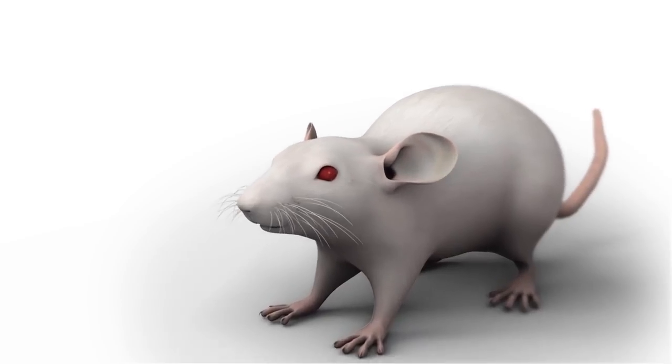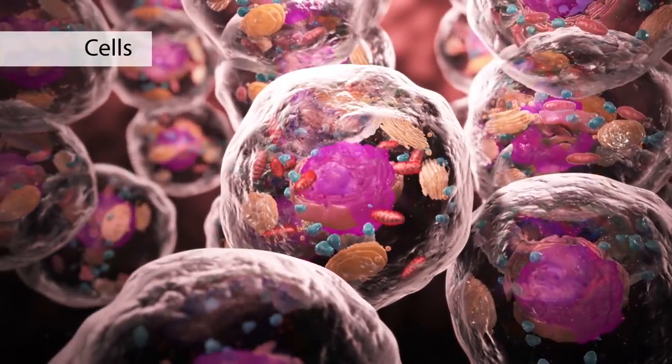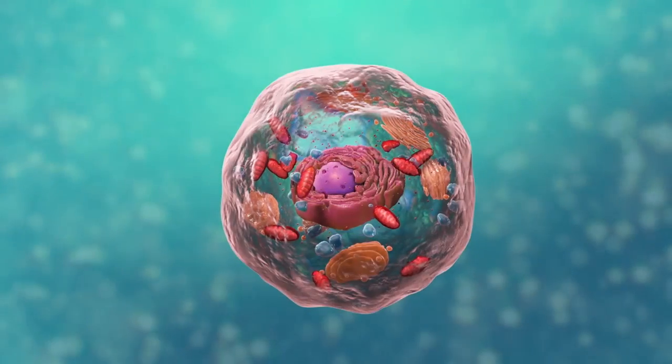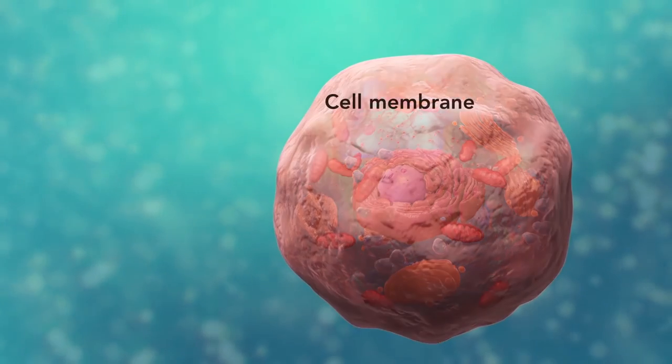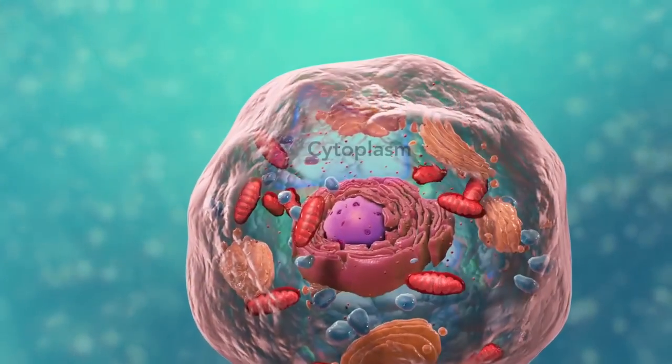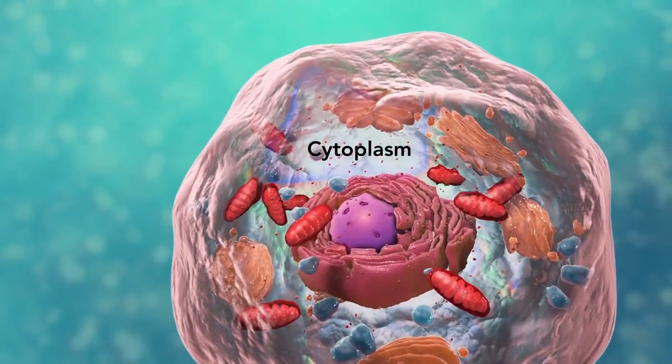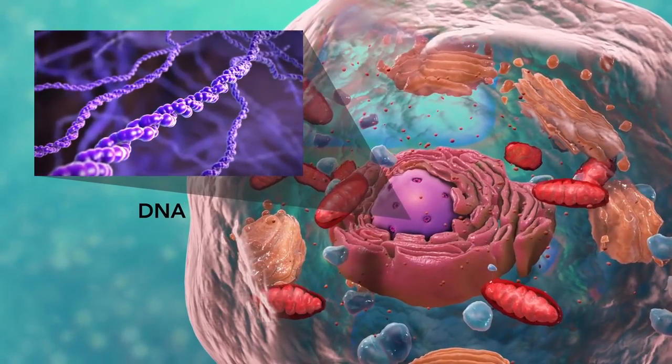Cells are the smallest living units of an organism. All cells have three things in common no matter what type of cell they are. All cells have a cell membrane which separates the inside of the cell from its environment, cytoplasm which is a jelly-like fluid, and DNA which is the cell's genetic material.